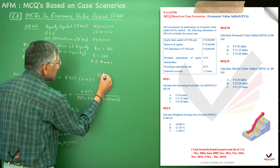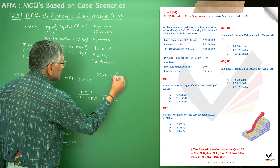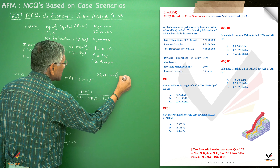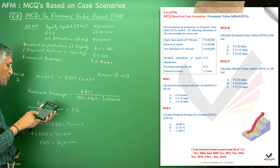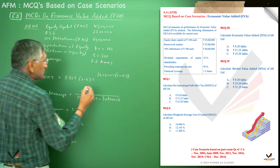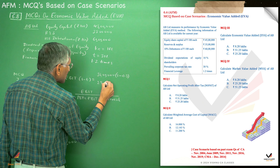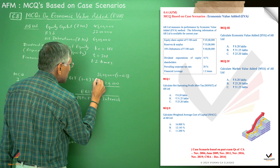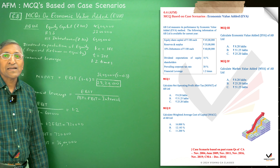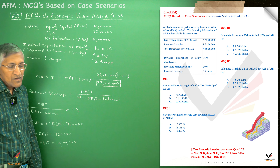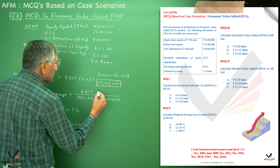EBIT is Rs 36 lakhs. So NOPAT = 36 lakhs × (1 minus 0.30) = 36 lakhs × 0.7 = Rs 25.2 lakhs. So the answer for MCQ number one, net operating profit after tax, is option number C.